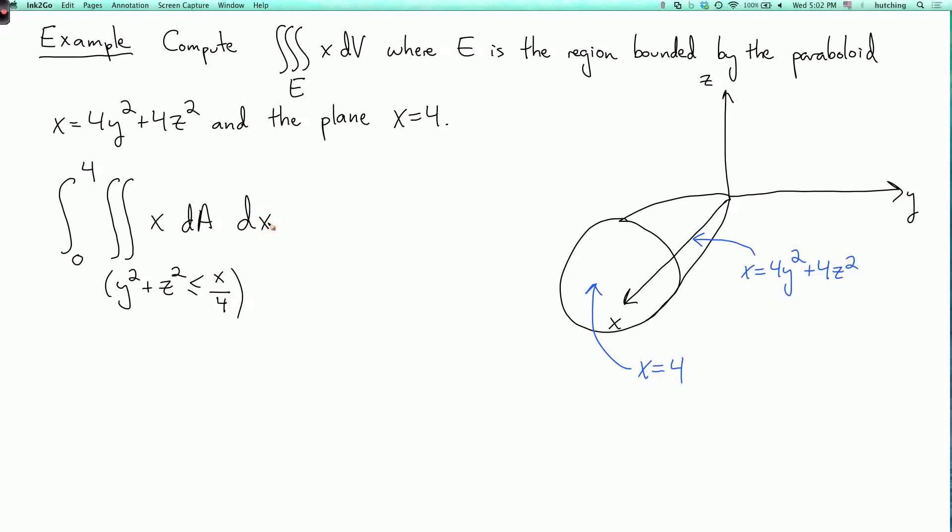So why can I do this? Well, so once you fix x, then what are the possible values of y and z? Well, the boundary surface is where x equals 4y squared plus 4z squared, and we want the inner part where 4y squared plus 4z squared is less than or equal to x. And if I just divide that by 4, then I get this equation: y squared plus z squared is less than or equal to x over 4. So that's where y and z can be. And then we have x dA dx.